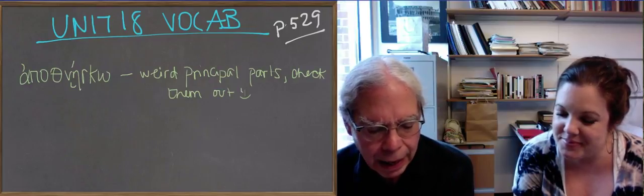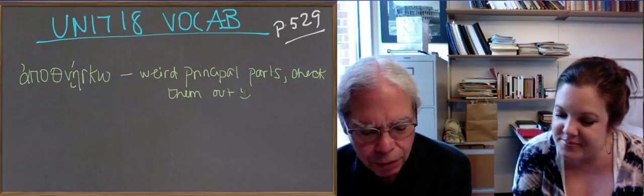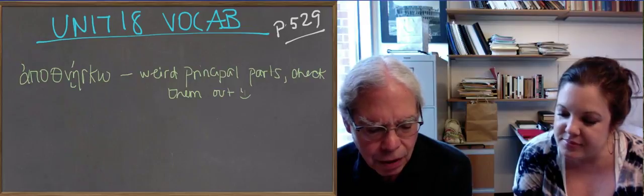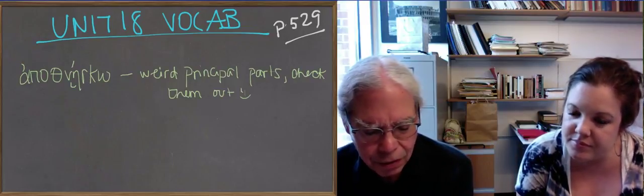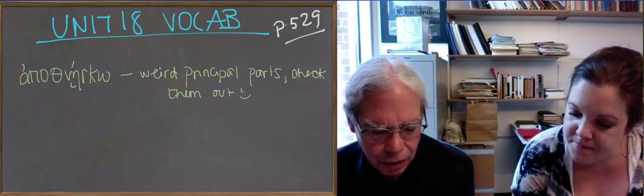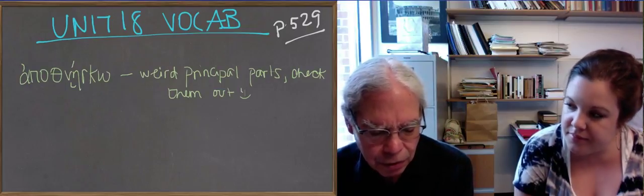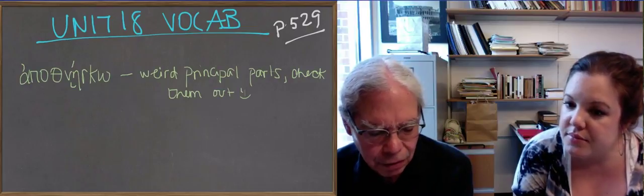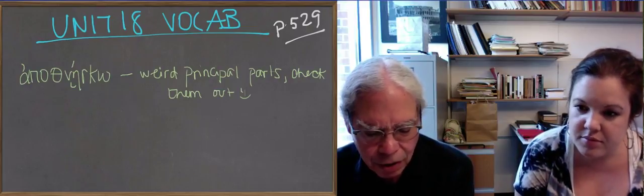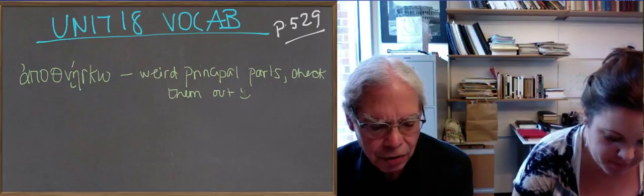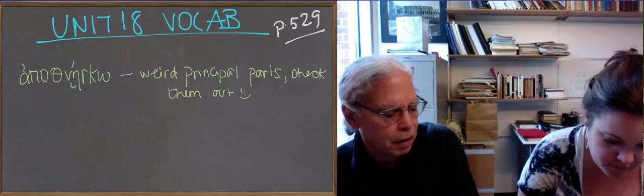They teach you the particle au, alpha-upsilon-long with a circumflex, which means again or in turn. It's a common particle in Greek. It's a come-second-in-the-sentence post-positive particle and gives something about the logical connection of the sentence to the previous one.